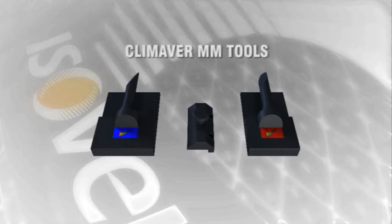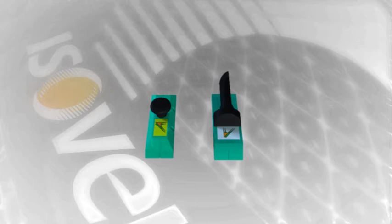KlimaVair MM tools are used to make the cut grooving in duct boards, and the KlimaVair MTR tools are used to cut straight ducts and transform them into duct assemblies.